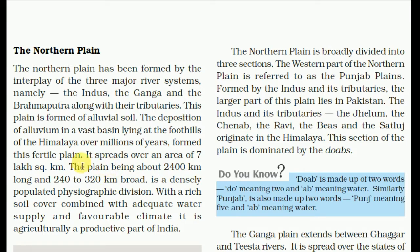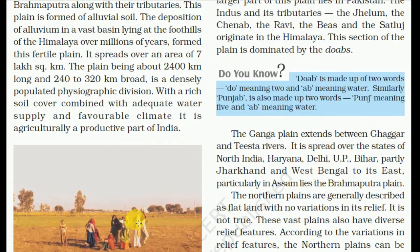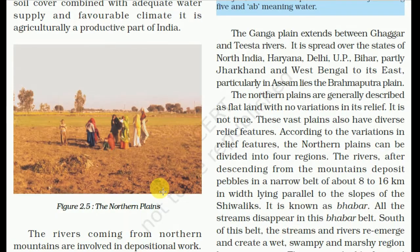The Northern Plains spread over an area of 7 lakh square kilometers. The plains are about 2,400 kilometers long and 240 to 320 kilometers wide. It is a densely populated physiographic region with a large soil cover, adequate water supply, and favorable climate, making it the most agriculturally productive part of India.